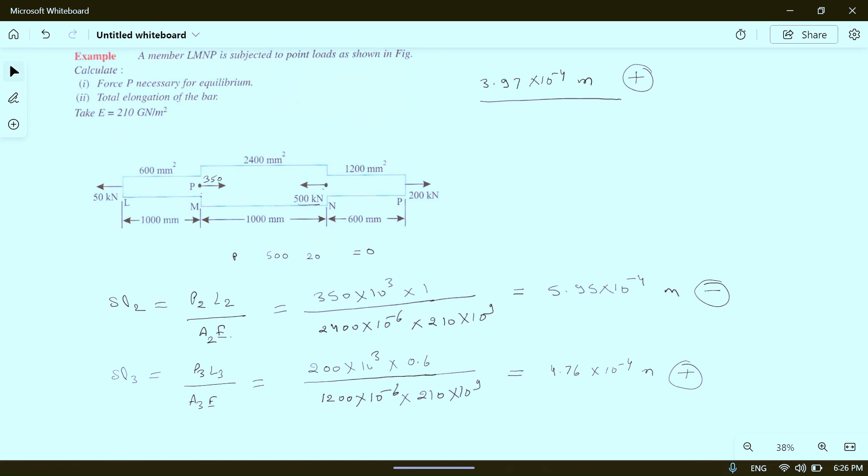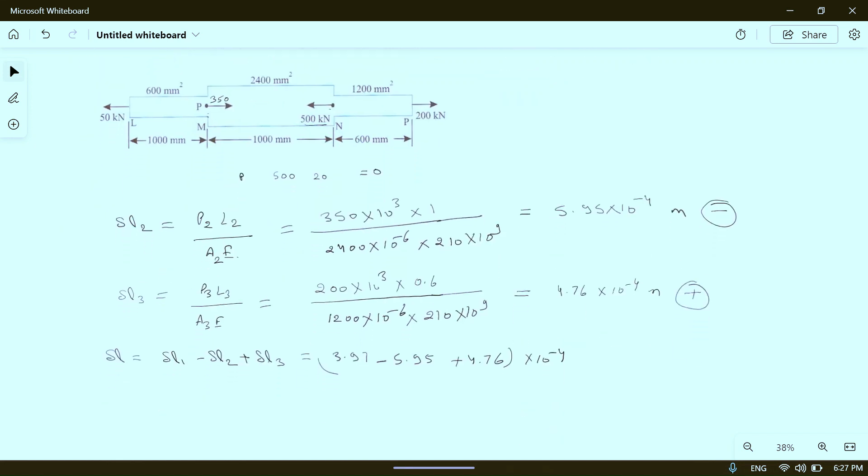If you calculate total elongation, delta L equals delta L1 minus delta L2 plus delta L3, which equals 3.97 minus 5.95 plus 4.76, times 10 to the power minus 4 is common in each. So it will equal 2.78 times 10 to the power minus 4 meters or 0.278 mm. This will be the value of total elongation in the bar.